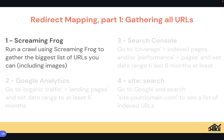The key with redirect mapping is getting a full list of all your URLs. People think they can just log into WordPress or Squarespace, grab their main pages, redirect those, and they're done. That's not enough. You need to redirect everything — not just your main pages, but all secondary pages too, every single one, so Google sees a seamless switch.